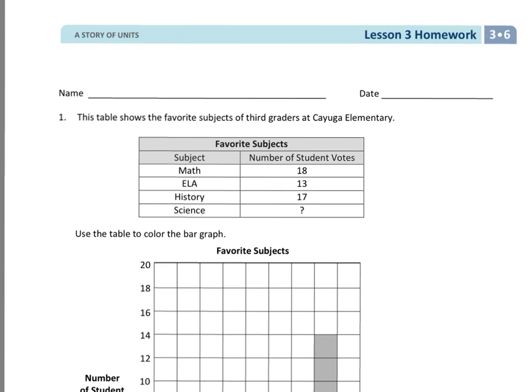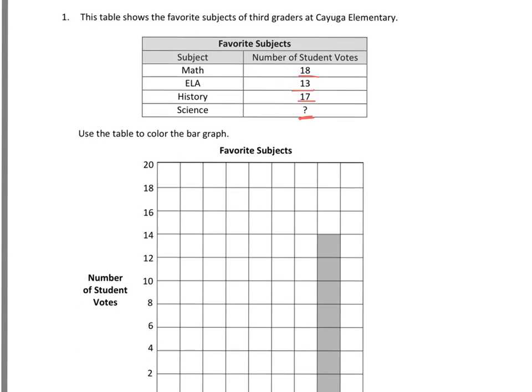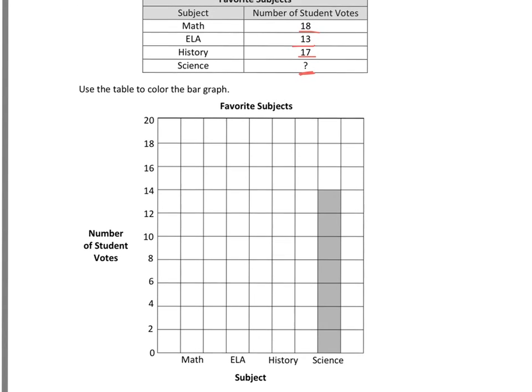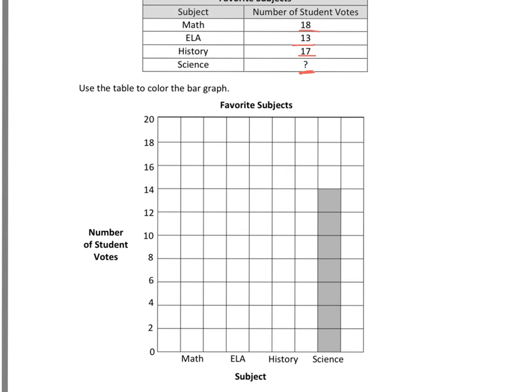We see that math has 18, ELA has 13, history has 17, and then science has a question mark. So below, it says use the table to color the bar graph, and we can see right now that science is already in there, and each line is going to represent 2 going up, so each box is 2.